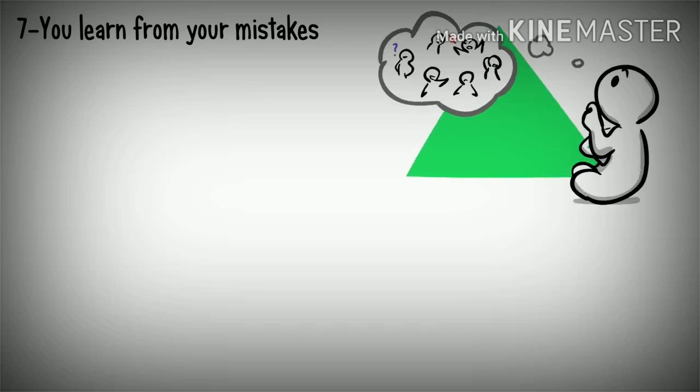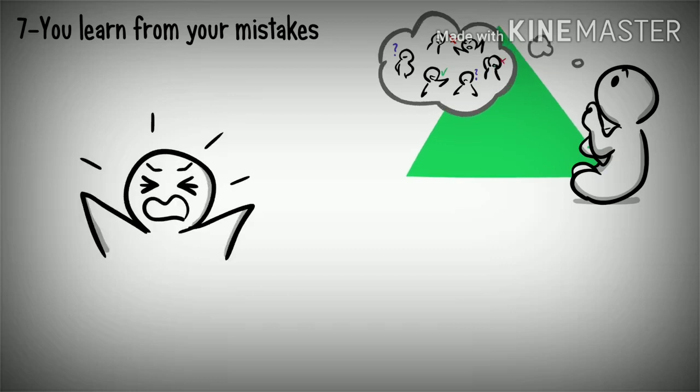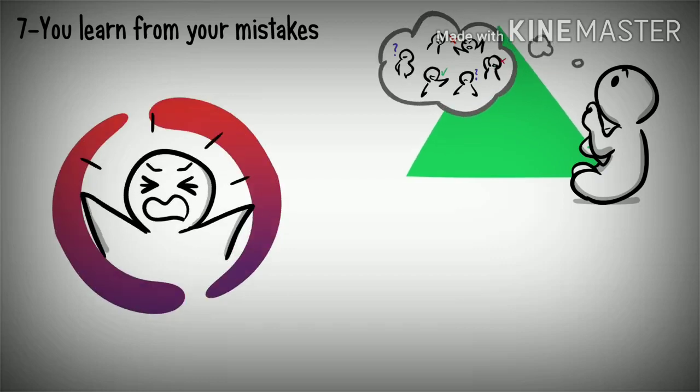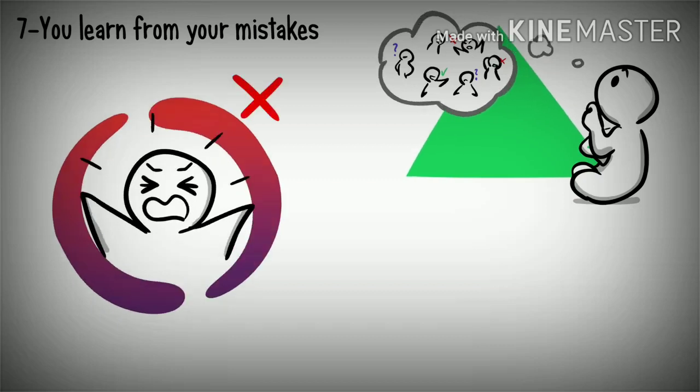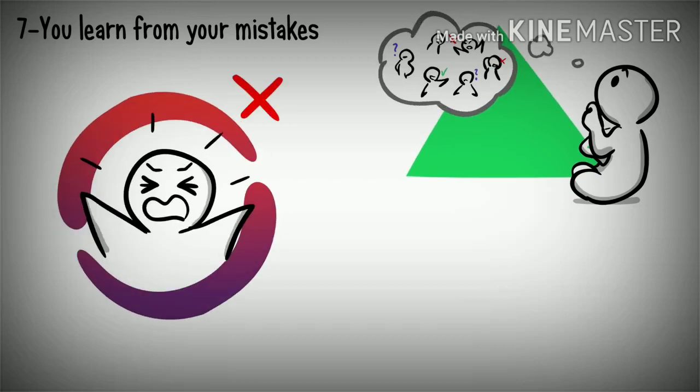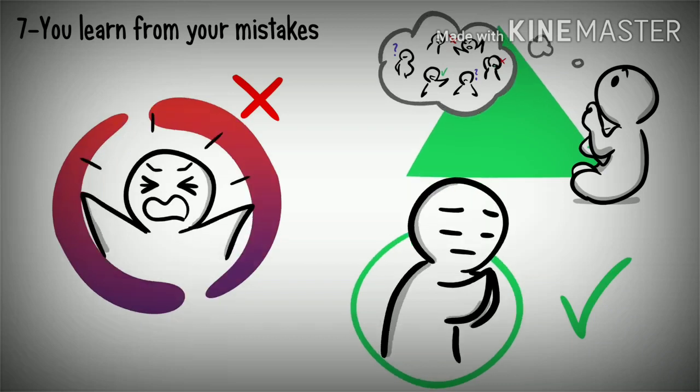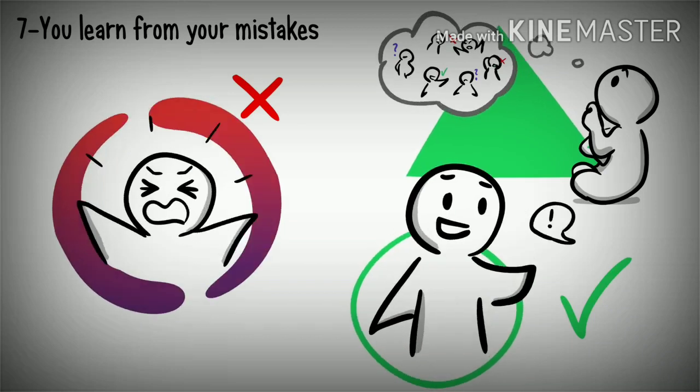7. You learn from your mistakes. Do you take time every day to reflect on your actions? This habit will take you far in life. People who tend to repeat their mistakes or focus on self-blame or blame external factors instead of problem-solving are more likely to stay in a toxic cycle. Learn to forgive yourself, apologize when you've done something wrong, and be open to feedback in order to get better.